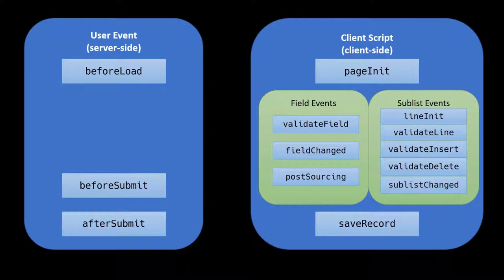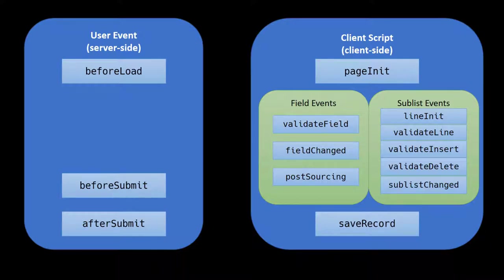To get started, let's take the example of a user loading a record in the UI to edit it. The first thing that happens is anytime a record is loaded out of the database, the before load event will trigger in any user events deployed to that record. This gives us a chance on the server side — whether it's a user in the UI, a CSV import, or another script — whenever the record is loaded out of the database, before load will trigger.